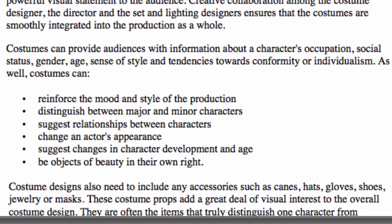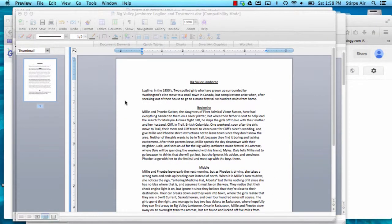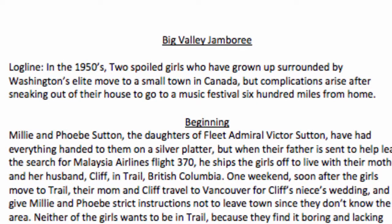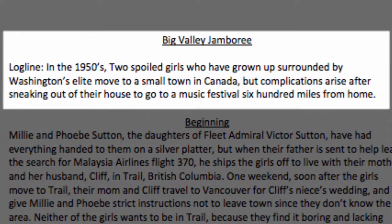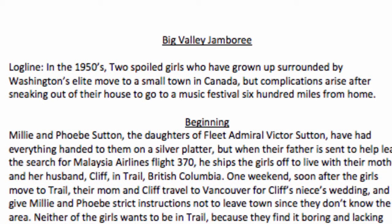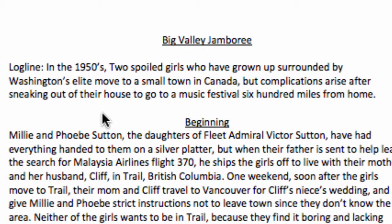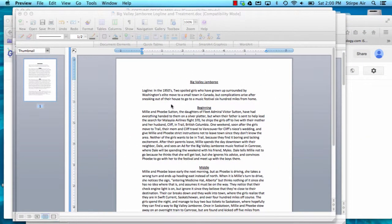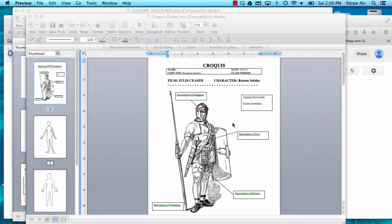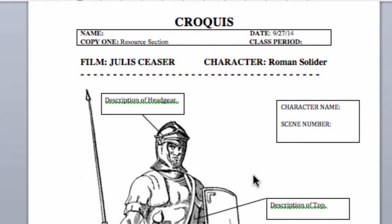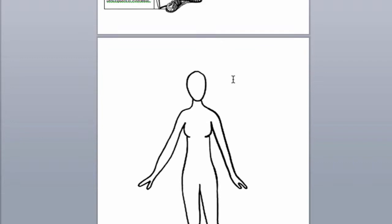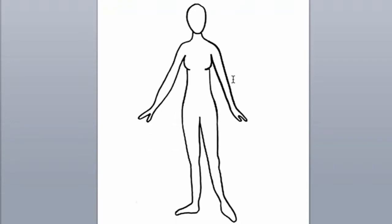So where do we start when designing a costume? We go into the script and the director's treatment. Here I'm working with the following treatment, where one of my costumes will come from. This is the logline: in the 1950s, two spoiled girls who have grown up surrounded by Washington's elite moved to a small town in Canada, but complications arise after sneaking out of their house to go to a music festival 600 miles from home. So Millie and Phoebe are our characters' names. Now I know who they are, where they live, and the time period that I'm working in. So once I know that, I'm going to use something called a croquis to create a costume for this character. A croquis is a naked figure of sorts — a black and white drawing of the body that the costume can be created on.